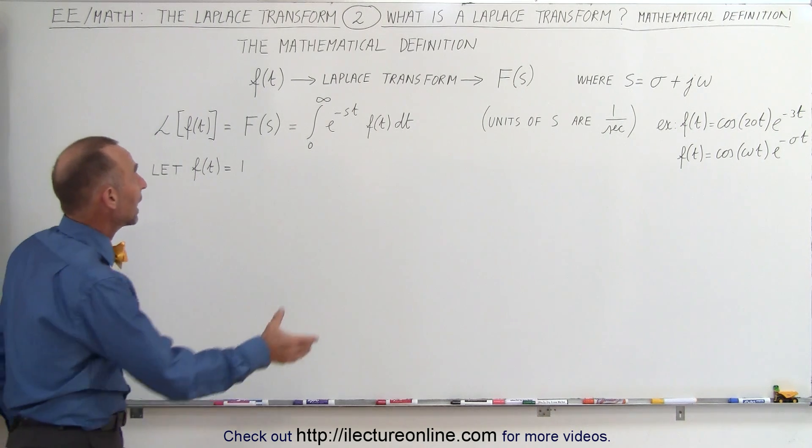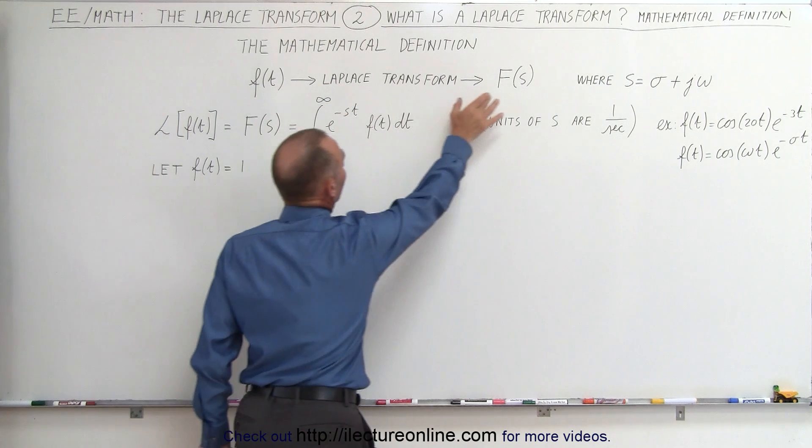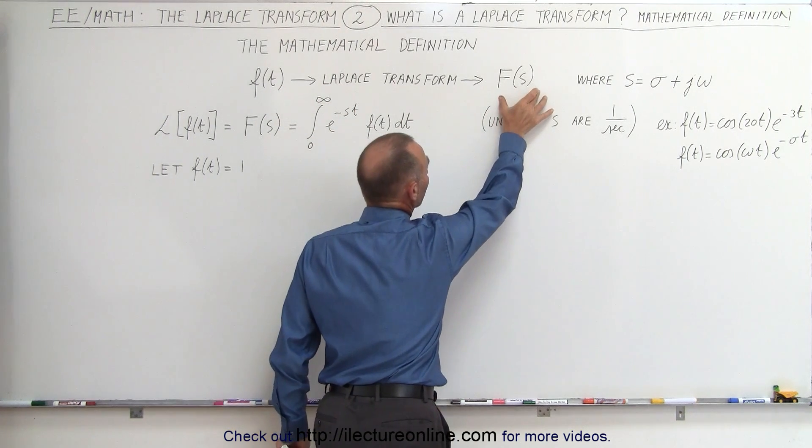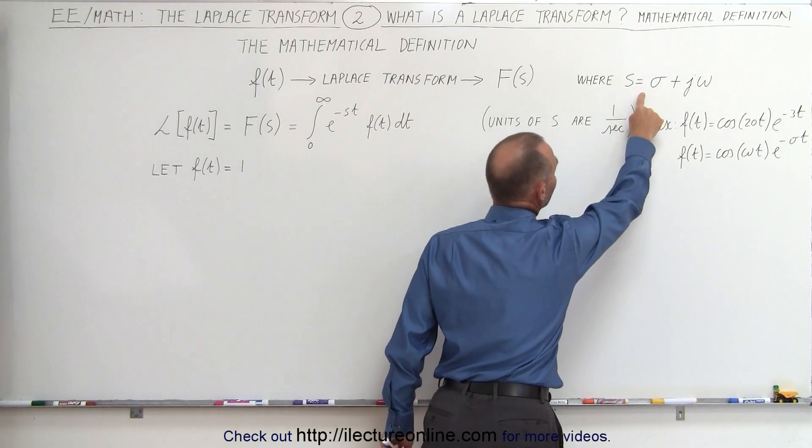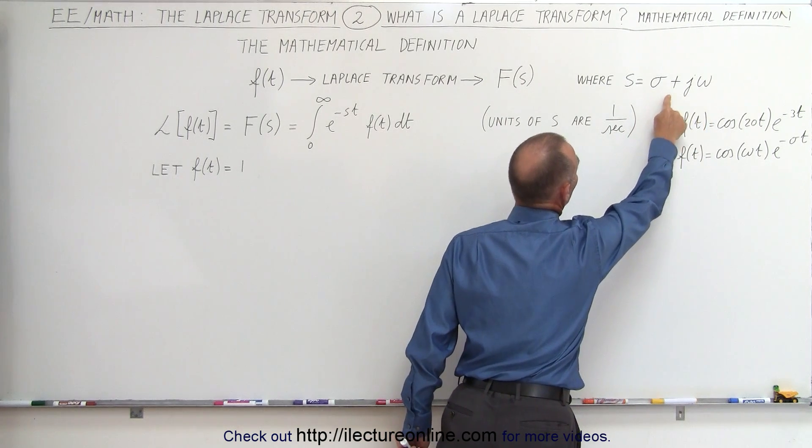What we do is we take a function that's in the time domain and convert it to a function that's in the frequency domain, the complex frequency domain, where s is represented by the complex number sigma plus j omega.